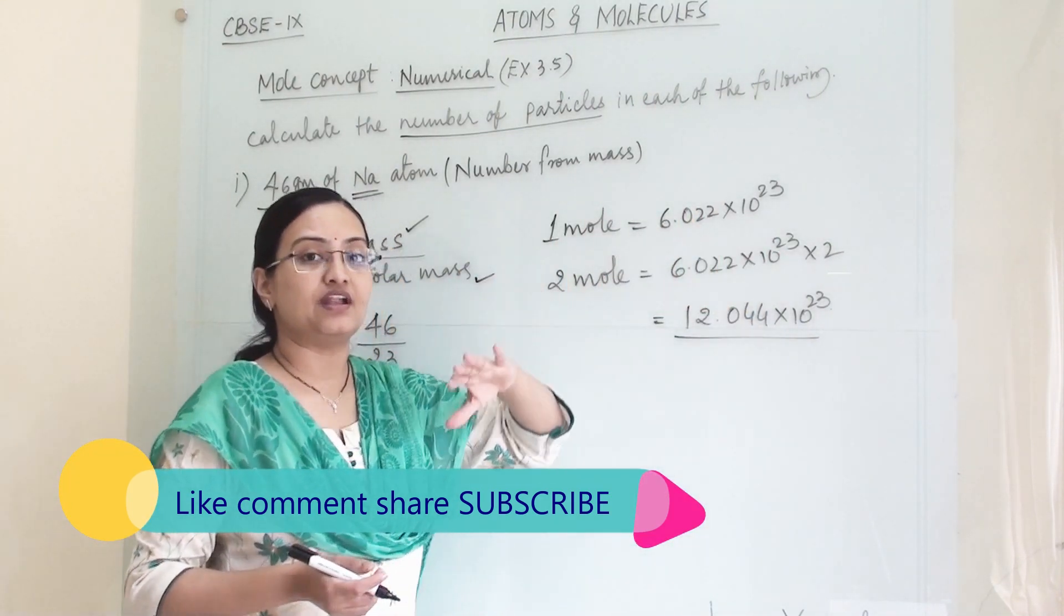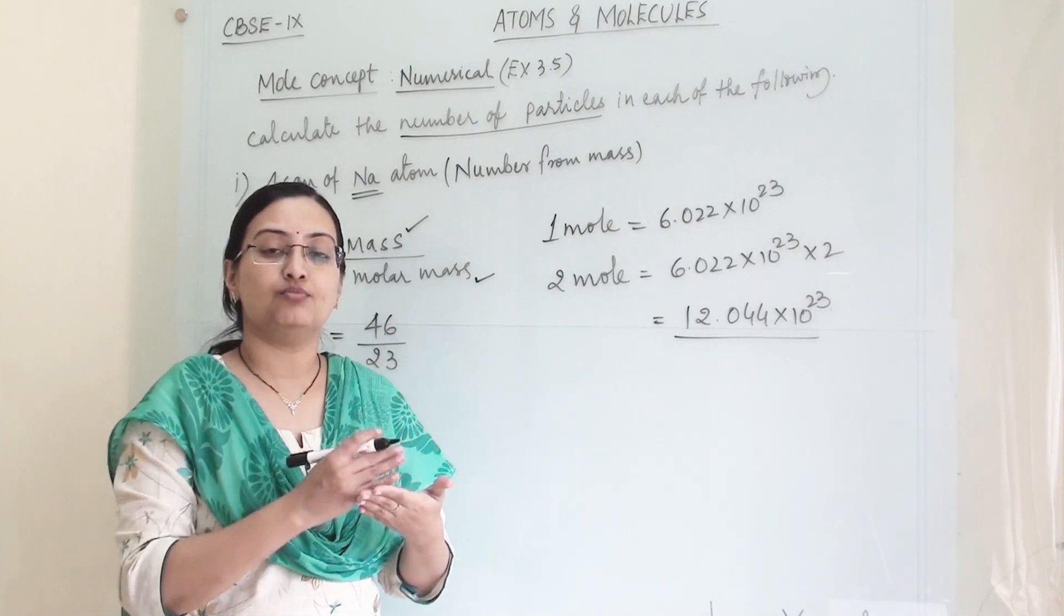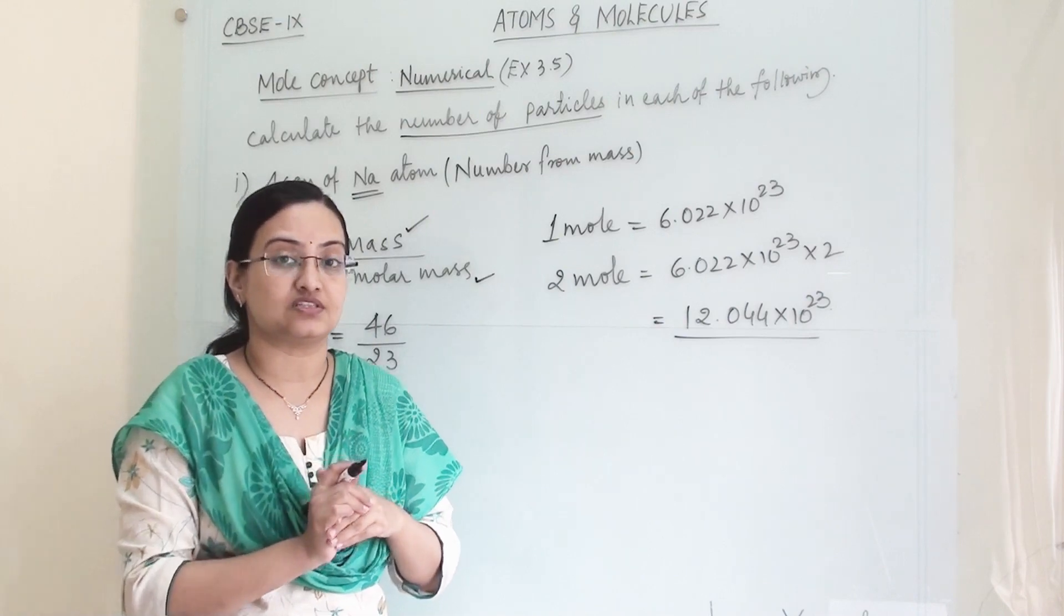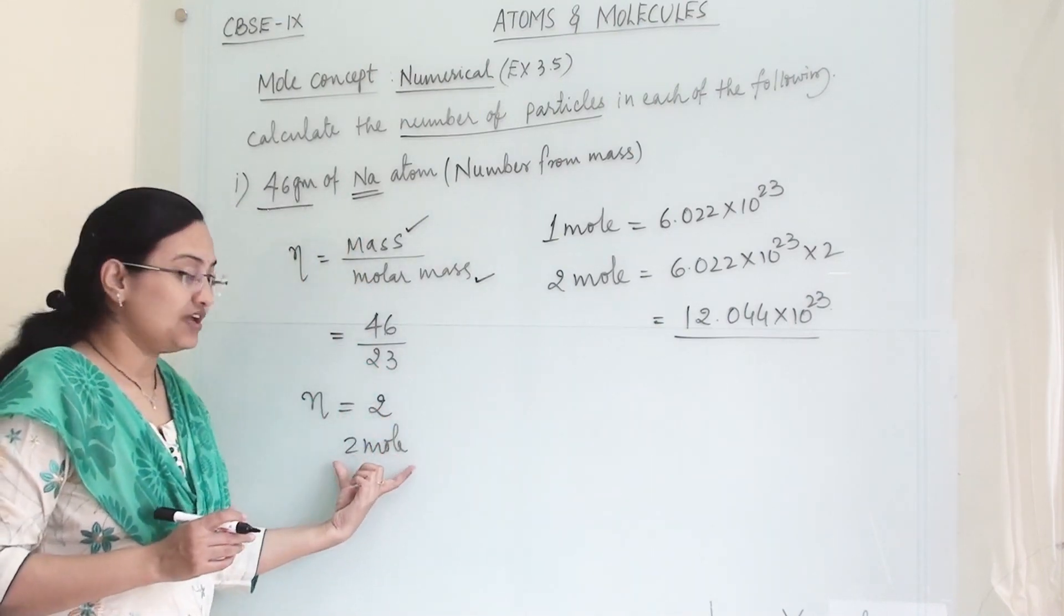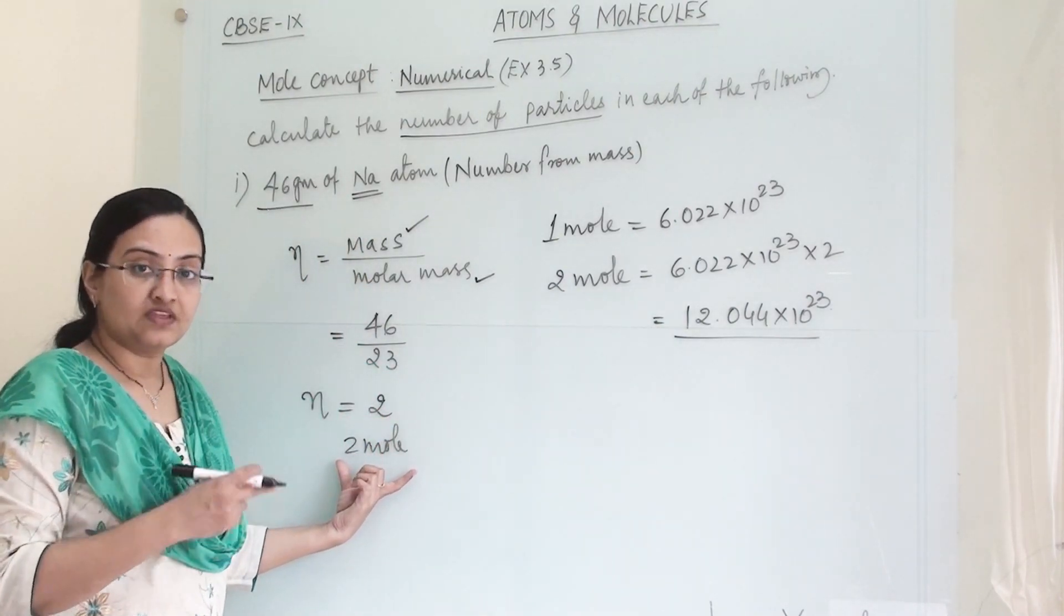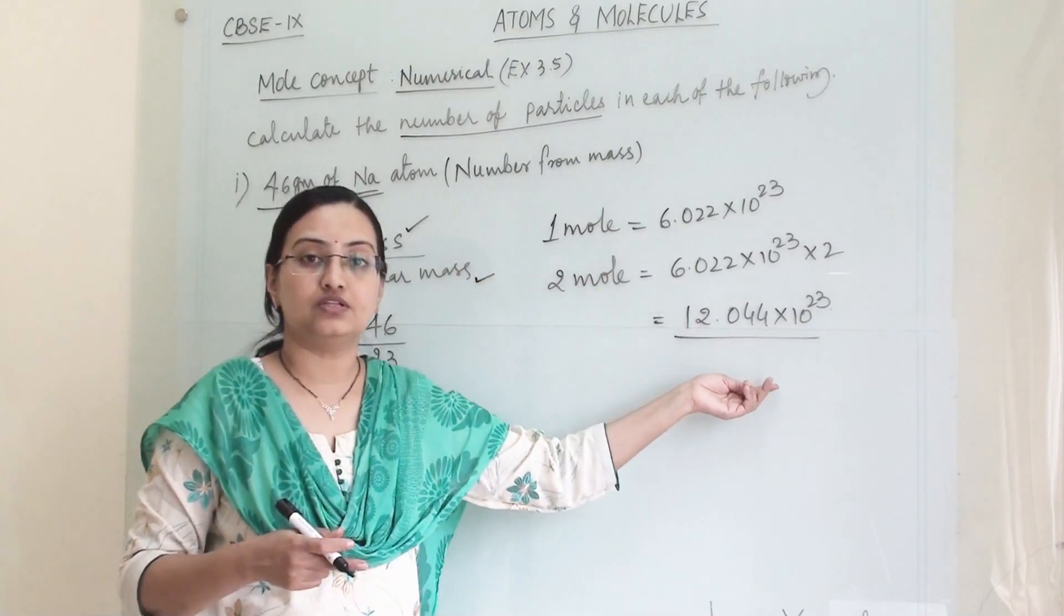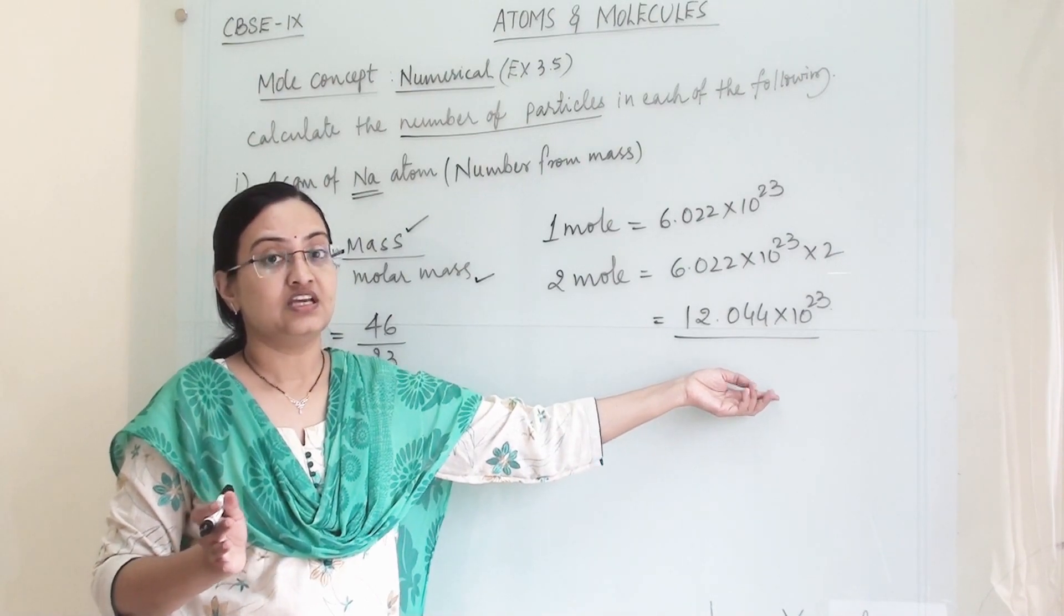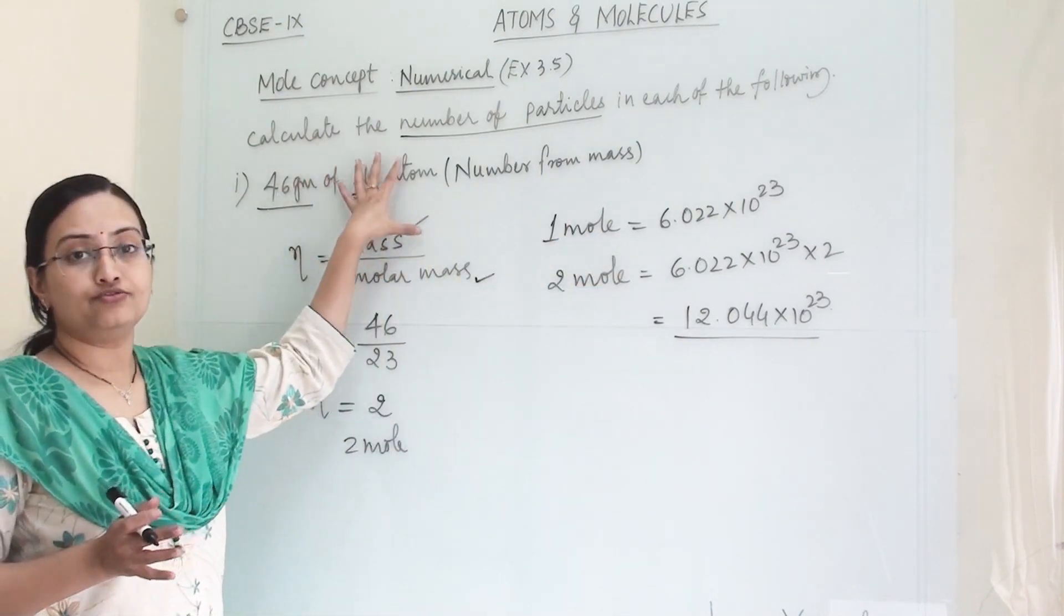How can we find out the number of particles? That means the number of atoms and molecules present in the substance. The thing is we have to find out the number of moles first, and then we can find the number of atoms, molecules, or particles present in the given mass of substance.